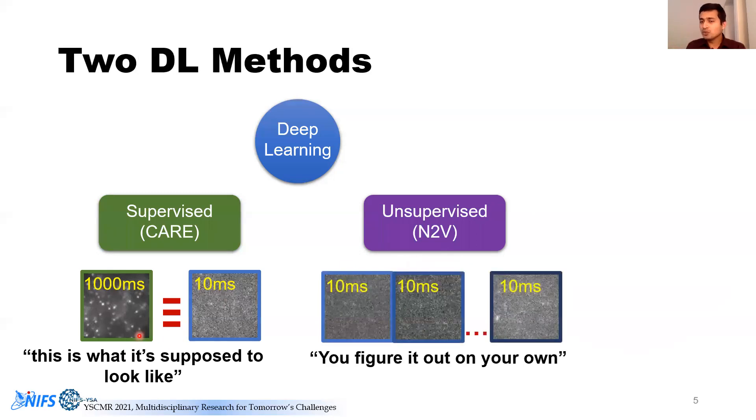If you look at the unsupervised method, basically, you're feeding the computer with only noisy images. You're asking the computer to figure out on its own what the noise pattern is supposed to be. So this is just a brief understanding of how these two methods are.